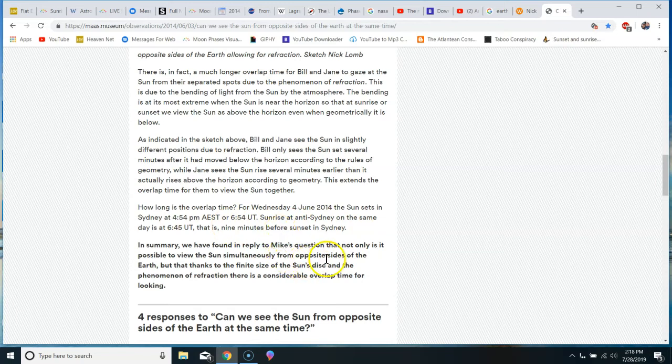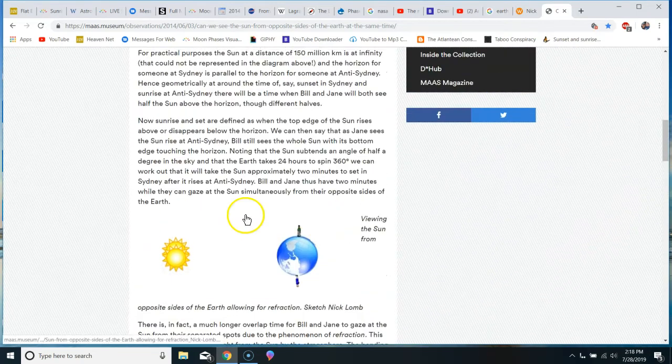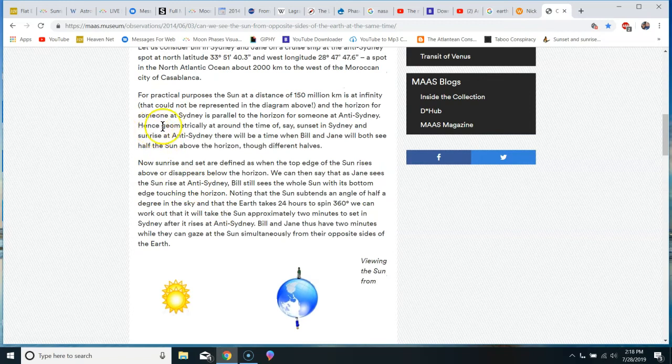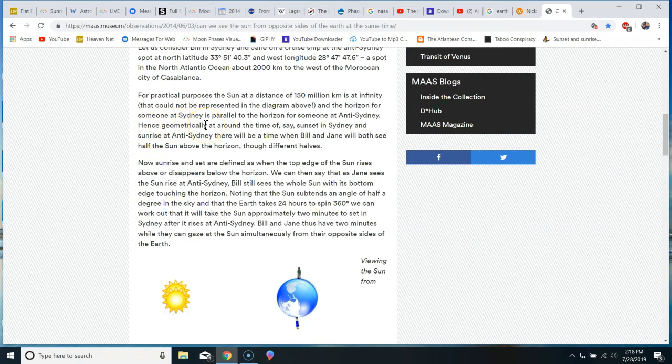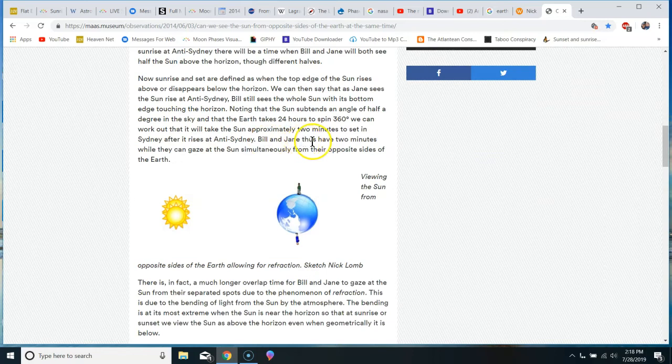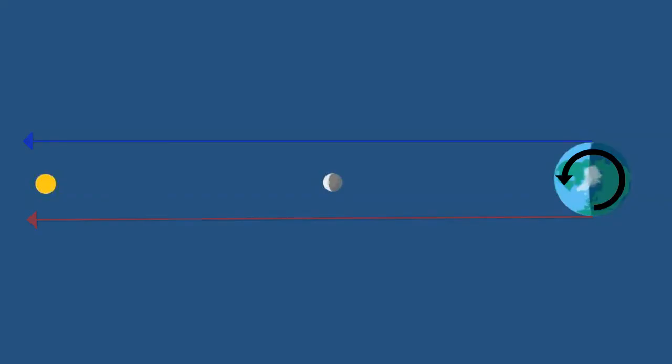So, like I said, you can read the whole thing if you want. But, the important thing is, even geometrically, no refraction involved at all, Bill and Jane can simultaneously gaze at the sun for two minutes from their opposite sides of the Earth. And I'm telling you that this is 100% unequivocally, geometrically, as impossible as these blue and red horizontal lines ever intersecting that sun which is on its own separate but parallel horizontal line. And since the refraction rescue device has been dismissed before it's even appealed to, there's only one other appeal Ball Earthers can make.